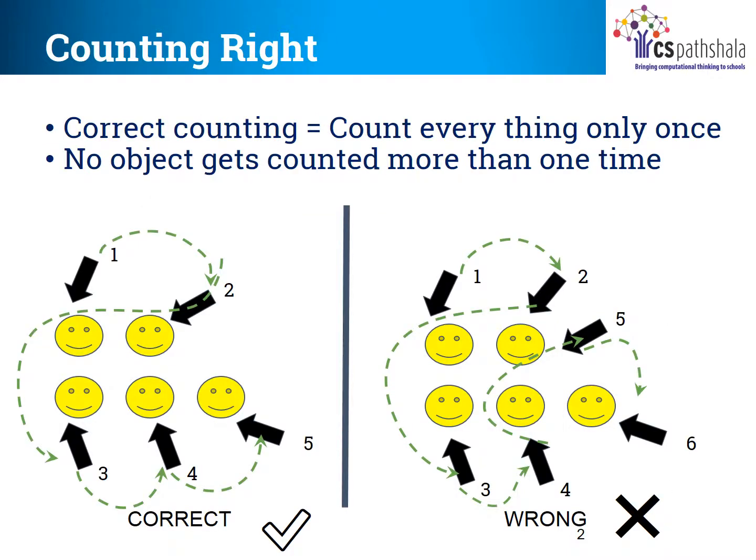Now let's see what we mean by counting correctly. When you count, each object must be counted only once. No object should be counted more than once, and you should not miss any object. If you count one object more than once or miss any object, it is a counting mistake and we'll get a wrong answer.